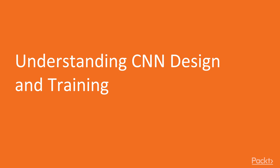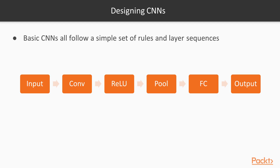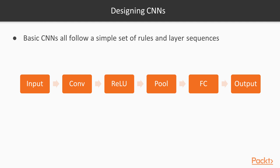Let's proceed to understanding the basic structure of a convolutional neural network. As you've seen in the last chapter, convolutional layers use the ReLU activation, which then use max pooling, then the dense or fully connected layer, before we go to the last layer where we output the classes.